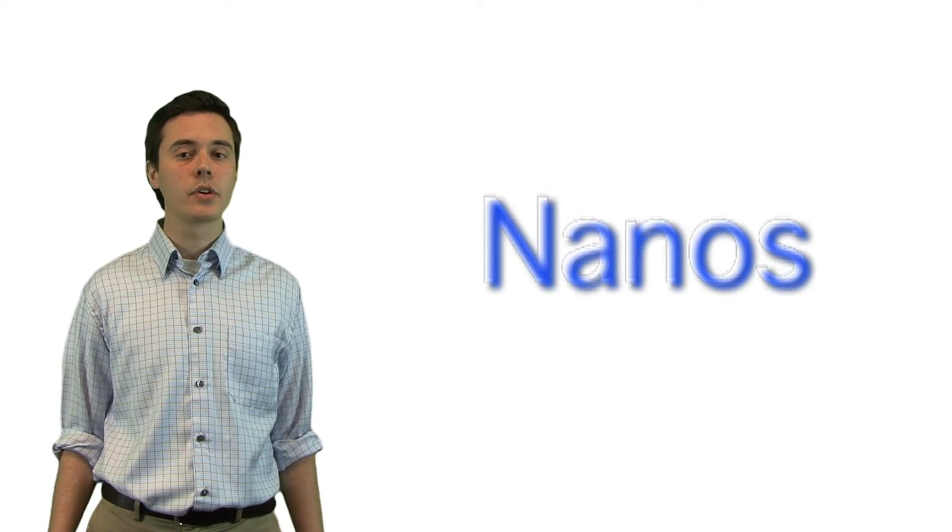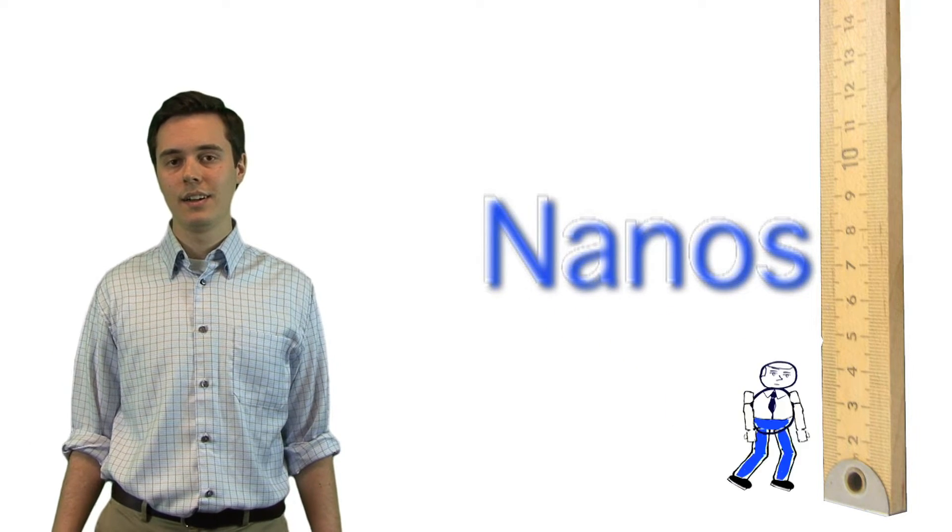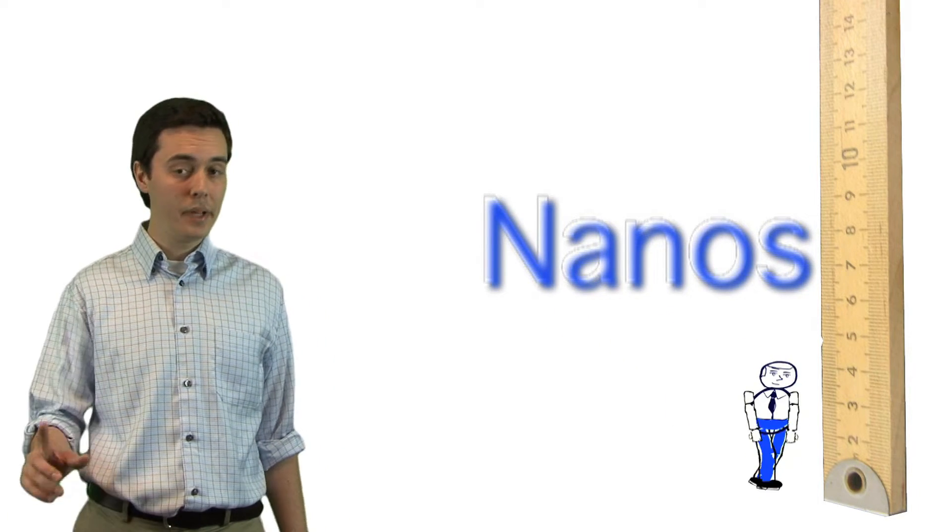But what are nanomaterials? Let's break it down in metrics. Nanomaterials have dimensions between one and one hundred nanometers. The term nano comes from the Greek word nanos, meaning small person. A nanometer is one billionth of a meter.